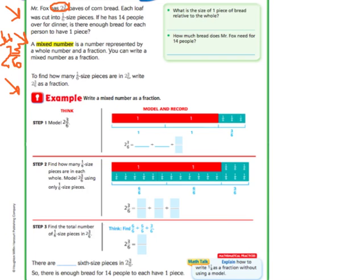You need to know that you can write that mixed number as a fraction to find out if there are enough pieces of bread for 14 people to come over. To find out how many 1/6 size pieces are in 2 and 3/6, write 2 and 3/6 as a fraction. They've given us some fraction strips to help us model what 2 and 3/6 is. Two whole pieces, one and one, and then 3/6 size pieces.